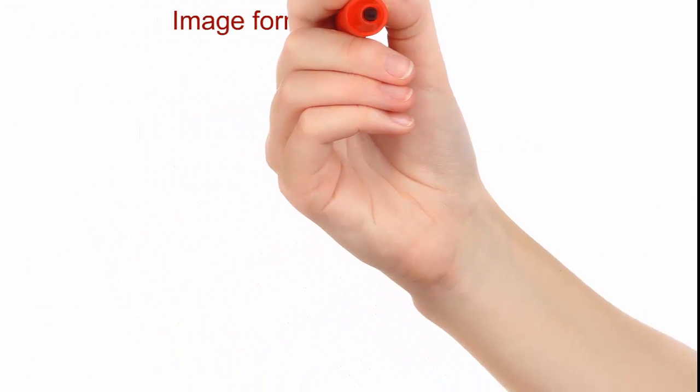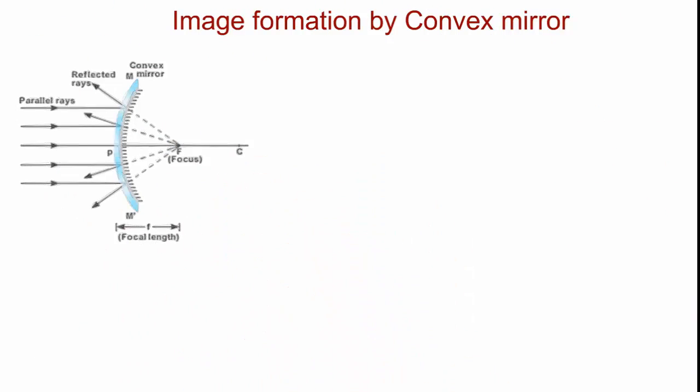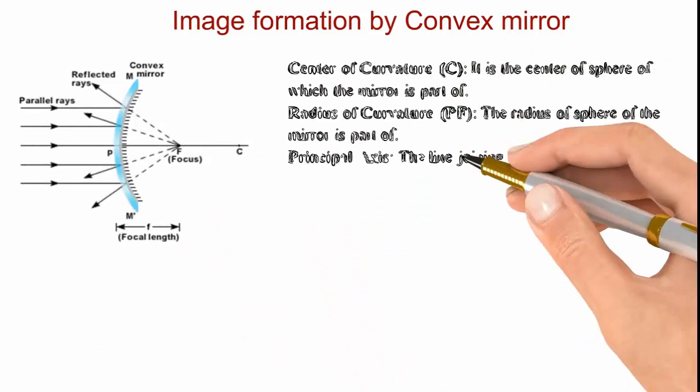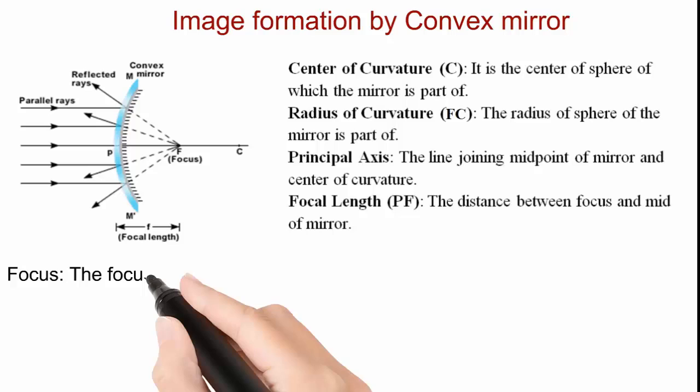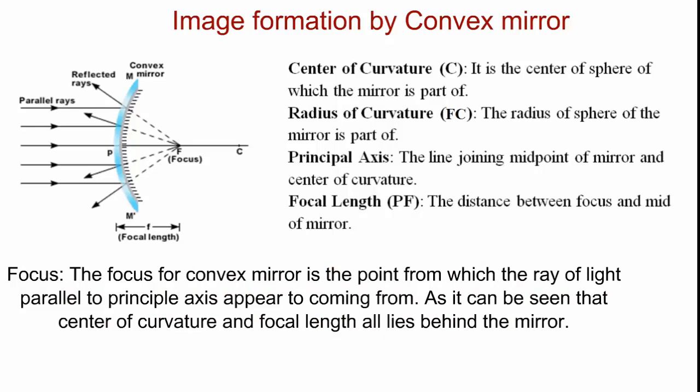Now let us consider another mirror: convex mirror. These terms are more or less same as concave except few. The focus for convex mirror is the point from which the ray of light parallel to principal axis appears to coming from. As it can be seen that center of curvature and focal length all lies behind the mirror.